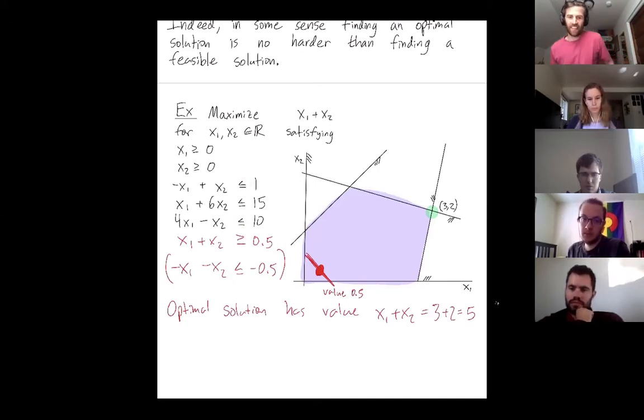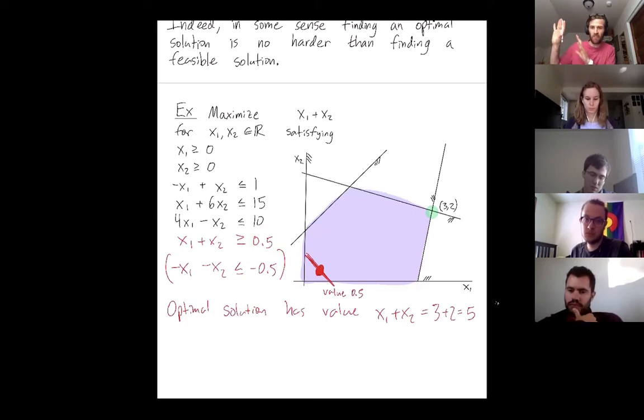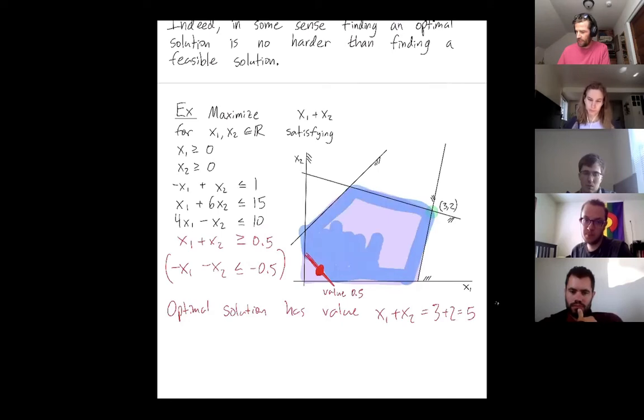Actually, I'm going to change this value 0.5 here for the following reason. If I ask my black box oracle to give me another feasible solution, so my feasible set has now changed. My feasible set is now just this set, right? I'm no longer interested in solutions that are worse.